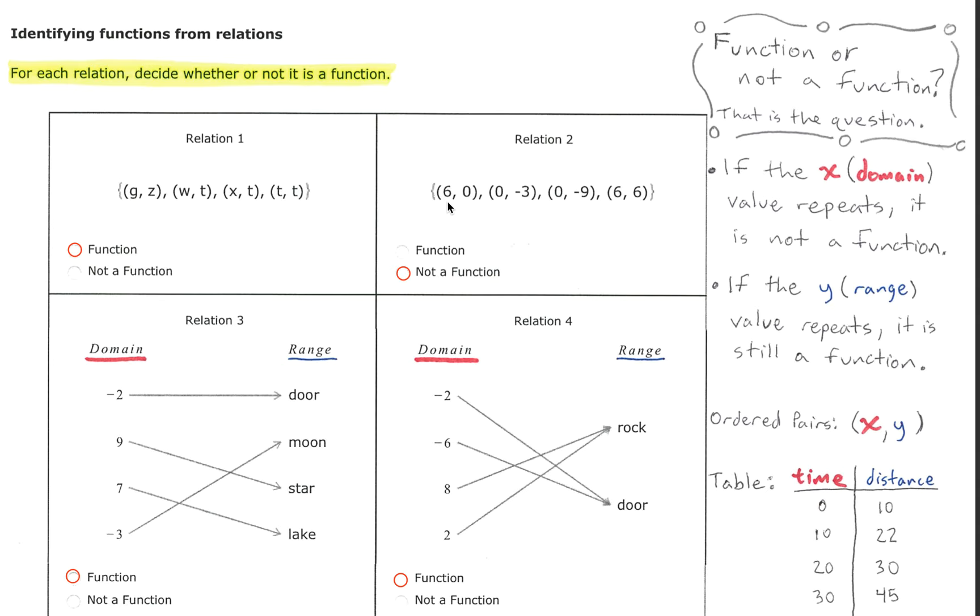In the second relation our x values are 6, 0, 0, and 6. Both 6 and 0 repeated therefore this is not a function.